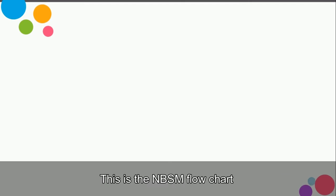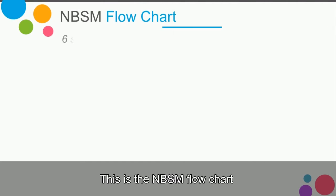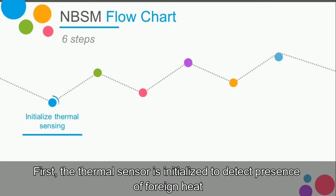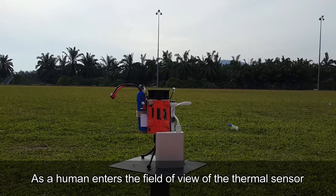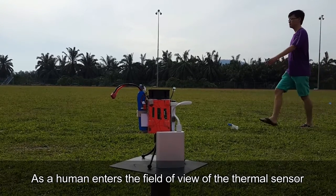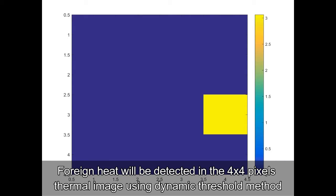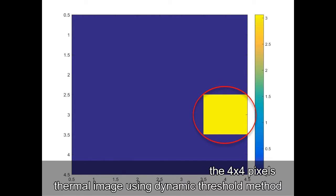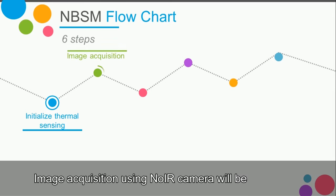This is the NBSM flowchart. First, the thermal sensor is initialized to detect presence of foreign heat. As a human enters the field of view of the thermal sensor, foreign heat will be detected in the 4x4 pixels thermal image using a dynamic threshold method. Then, image acquisition using the no-IR camera will be carried out.